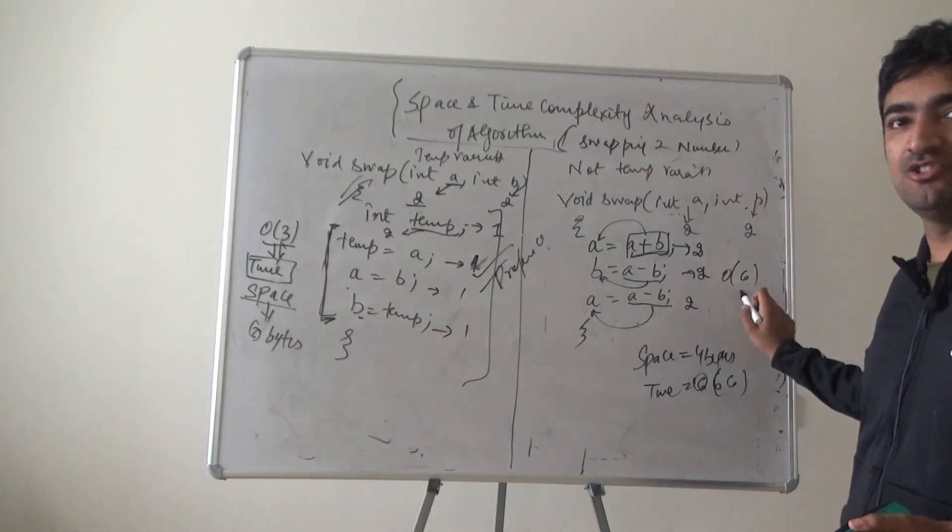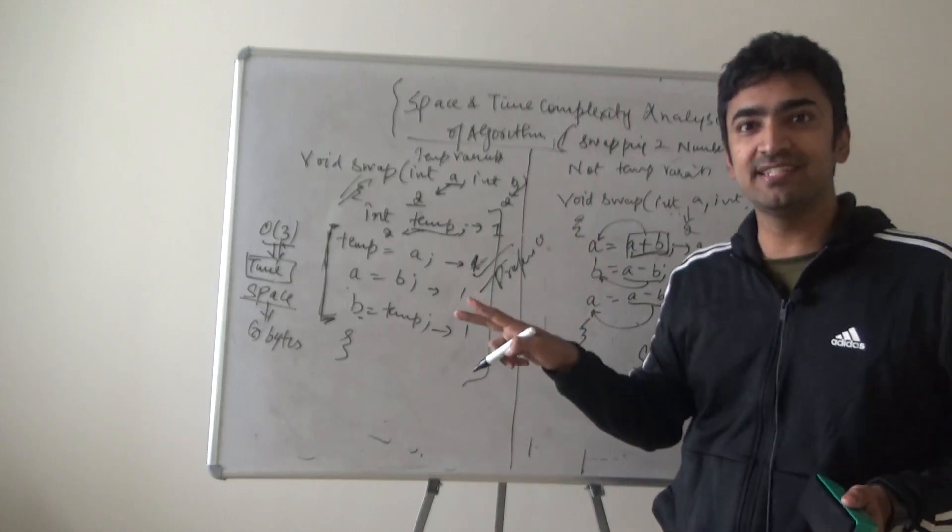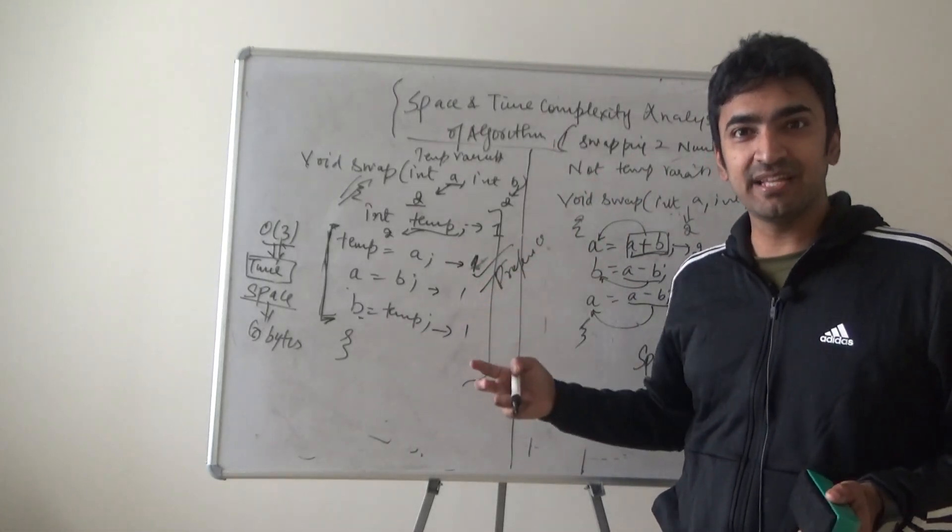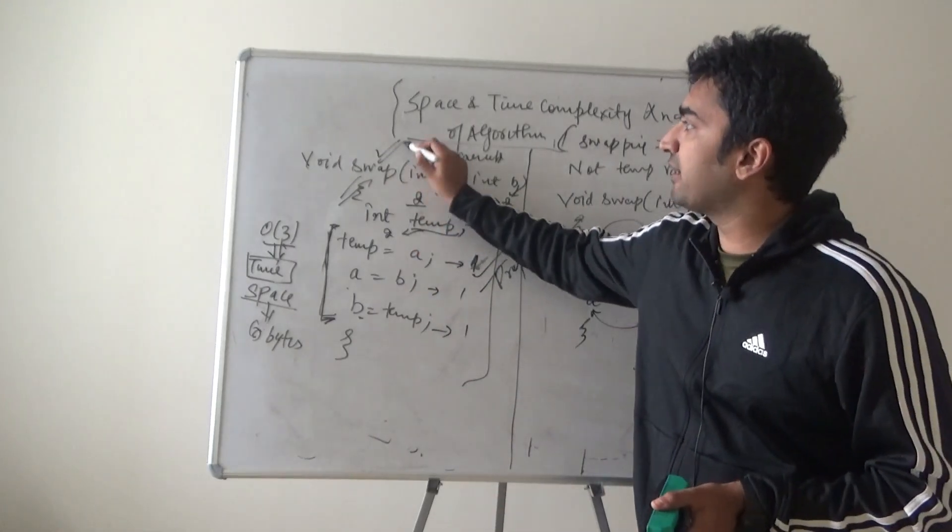And it was using six units of time because execution and then assignment was taking two bytes. So, two units of time multiplied by three steps, it took six units of time. So, this is preferred.